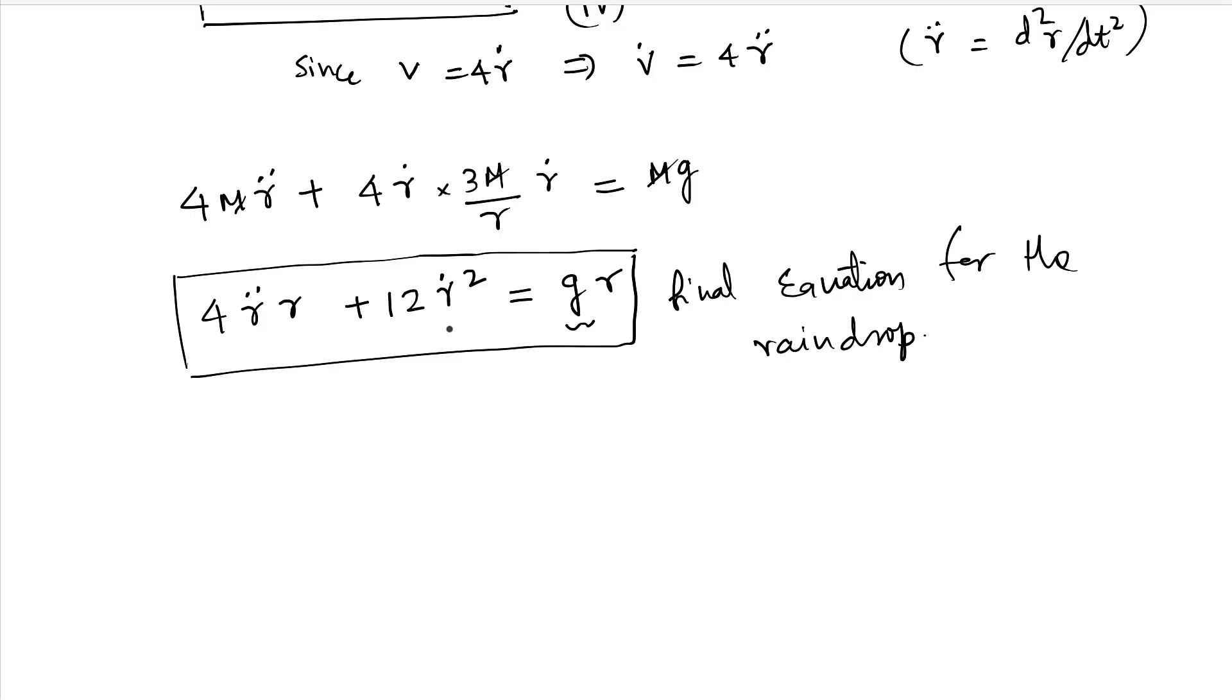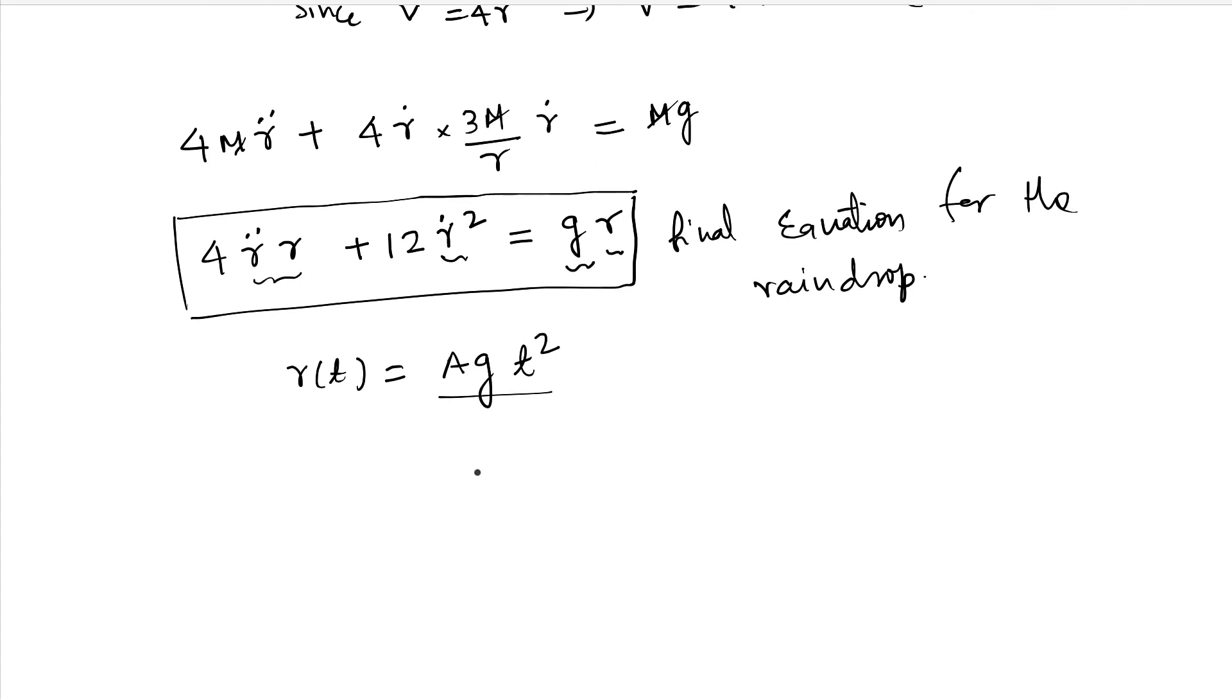Now, from symmetry, if you see, the dimension of all of these should match. And r is a function of t. So we can take r(t) as a g t square. Why are we doing this? Because we know that r is a function of t, and the dimension everywhere is same. So if r has a t to the power n, then r dot square should have the same power and same with this. Now, this function satisfies everything. So let's plug it in.